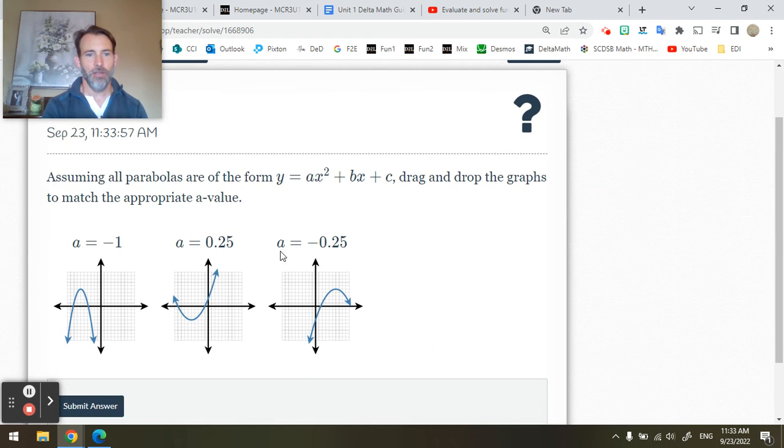So let's check these types of problems out. These ones ask you to look at three different parabolas and associate them with the appropriate a value. I know that negative a values open downwards, and we have two of those, so that's great. And then positive a values open upwards, and we have one of those.